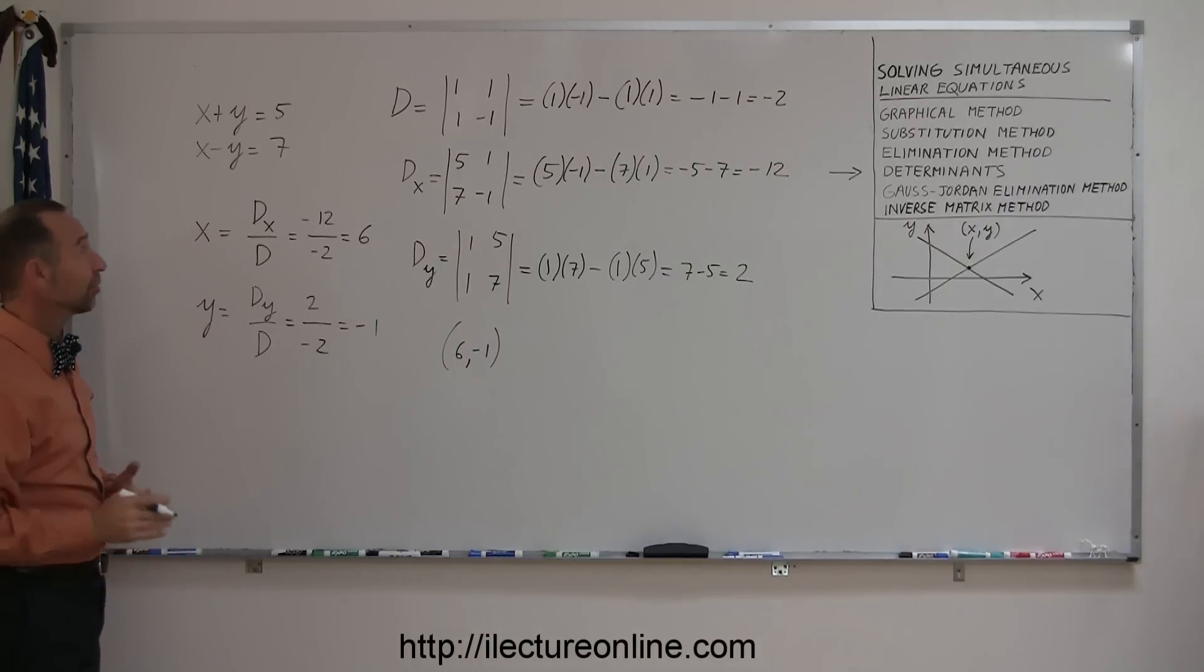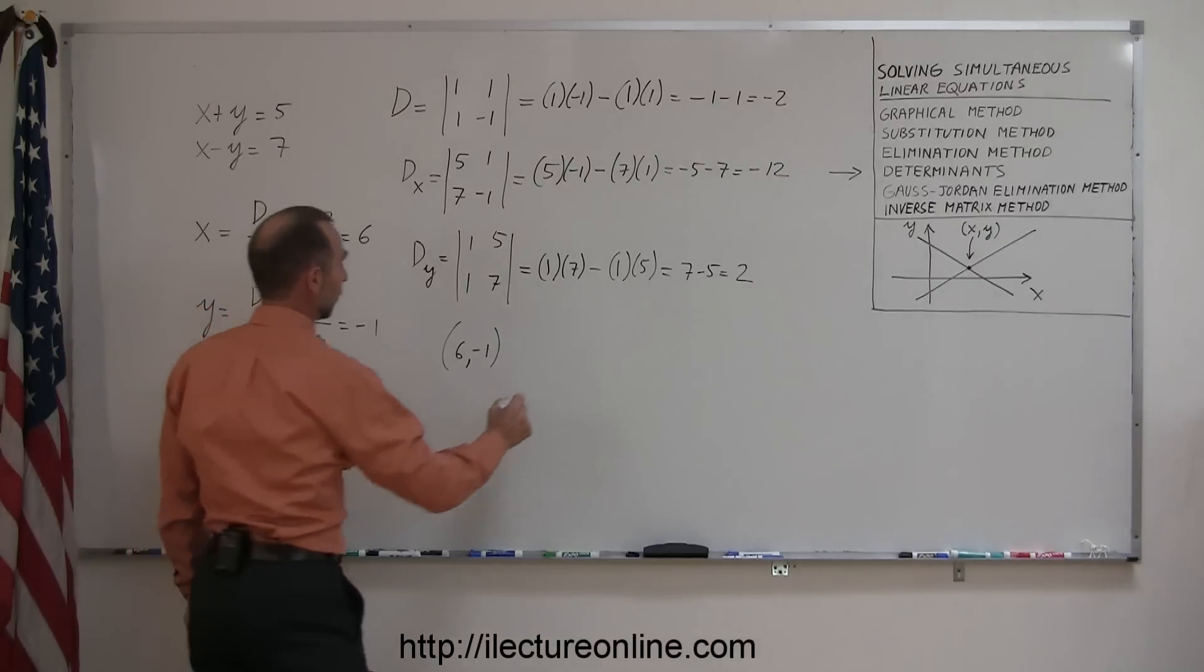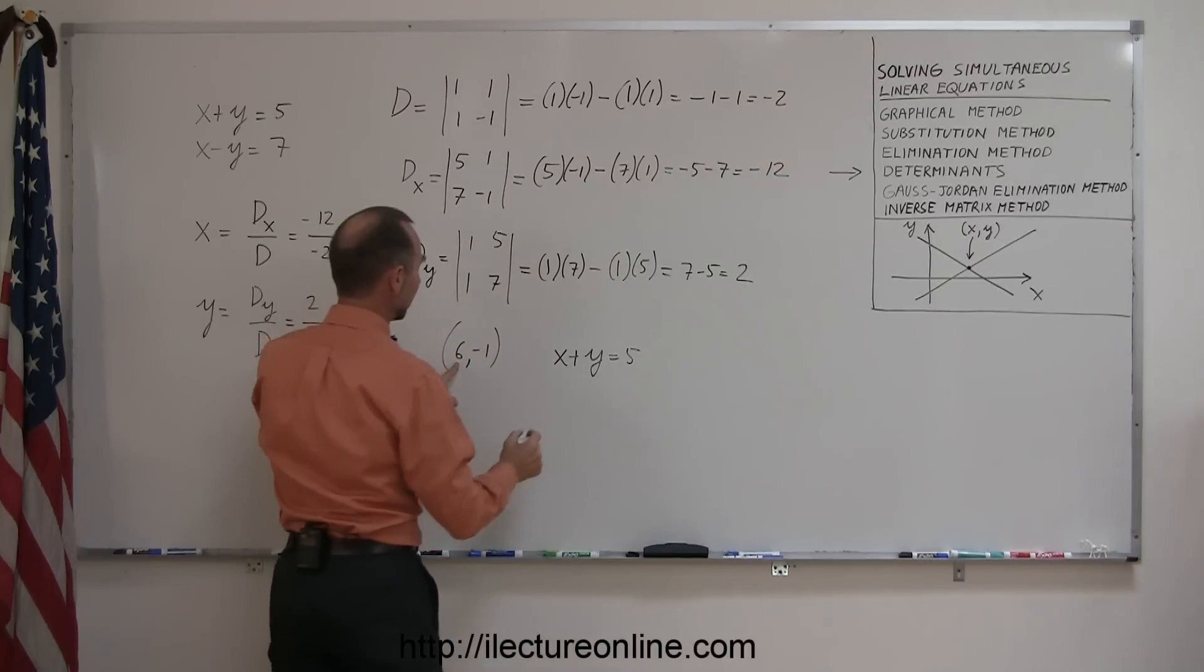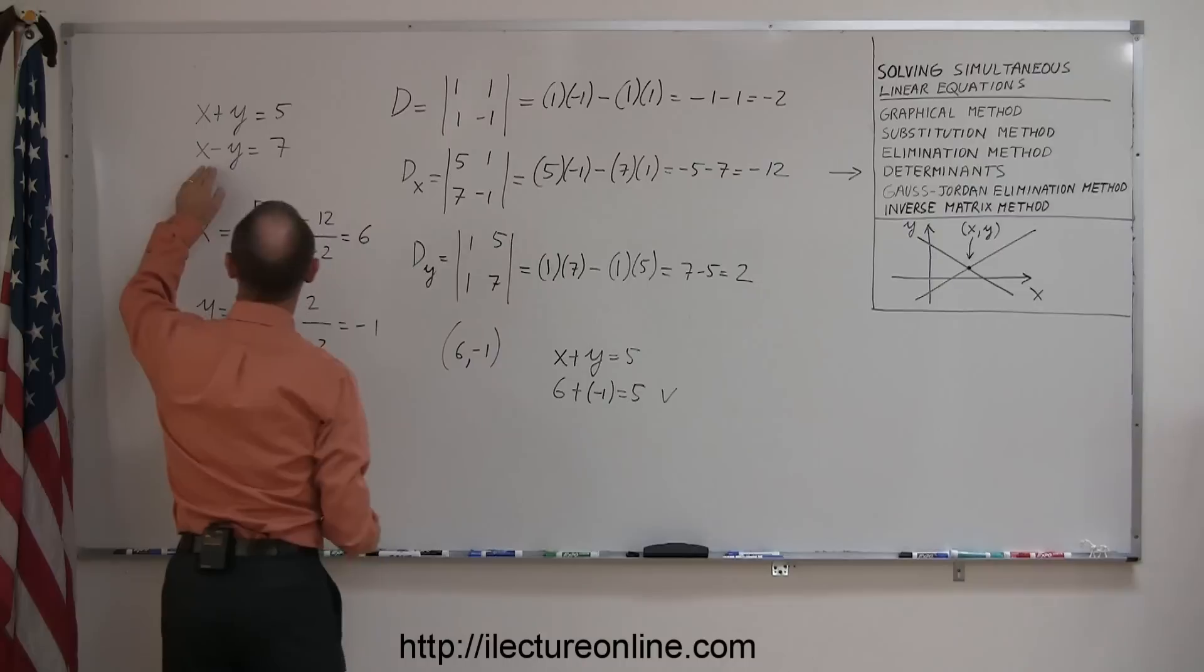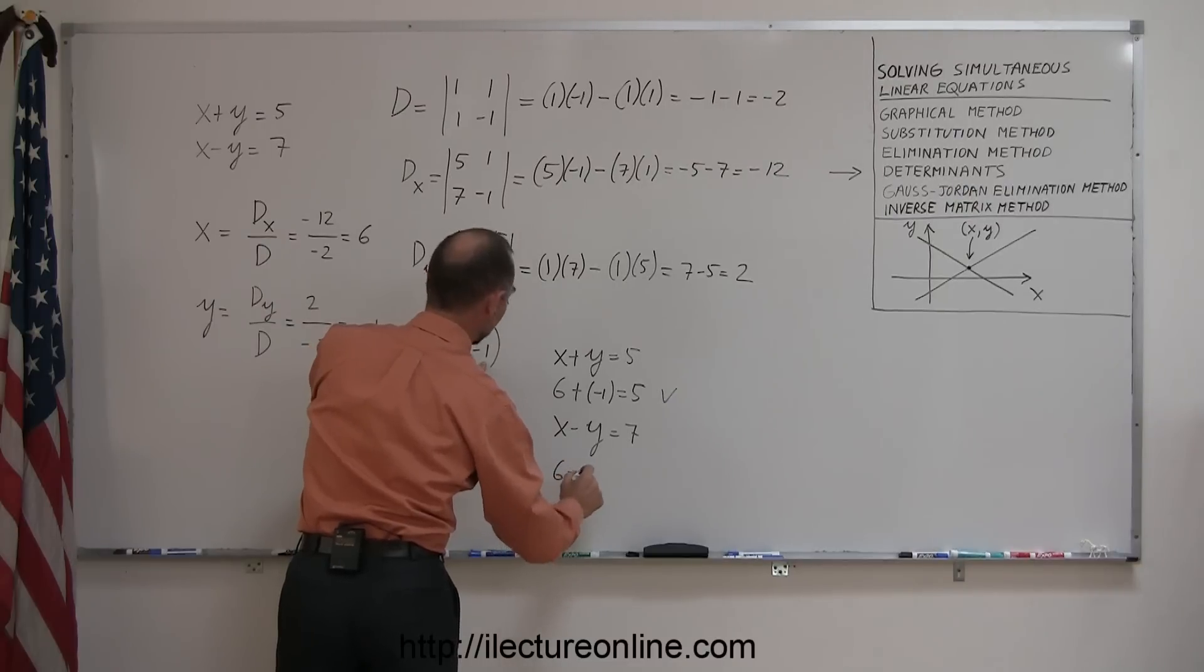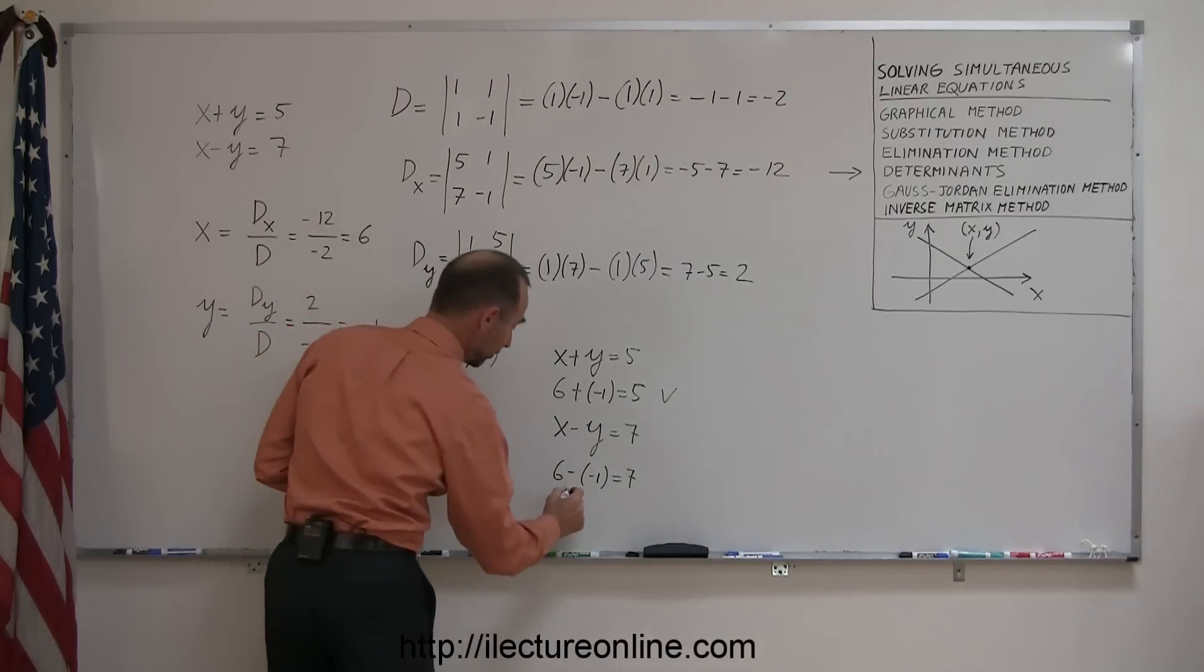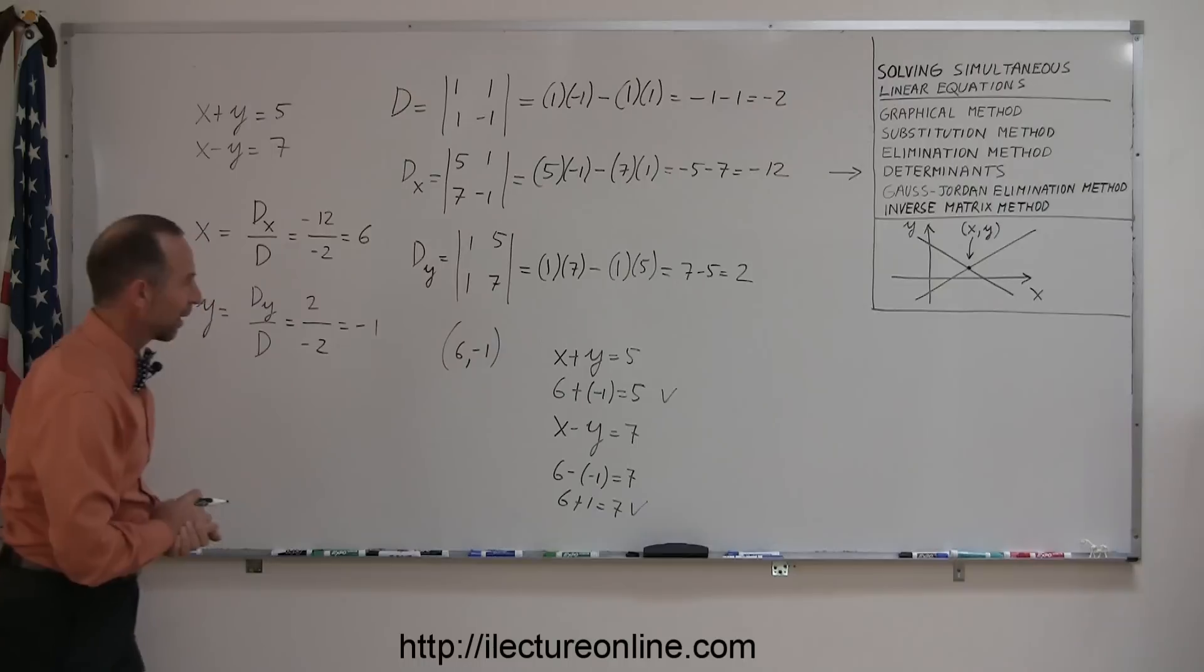To make sure we did this correctly, let's plug these numbers into our equations. For x plus y equals 5, plug in 6 for x and negative 1 for y. Sure enough, 6 minus 1 is indeed 5. For the second equation, x minus y equals 7, plug in 6 and subtract negative 1. When you subtract a negative number, it becomes positive, so 6 plus 1 equals 7. We found the right solution.